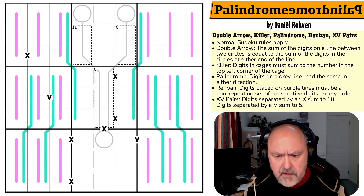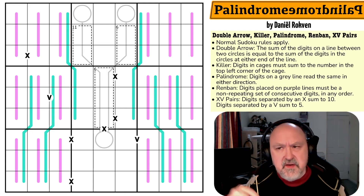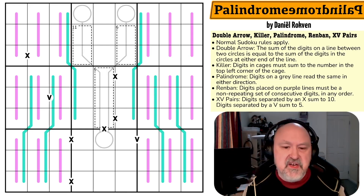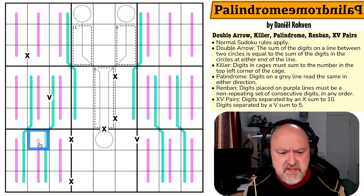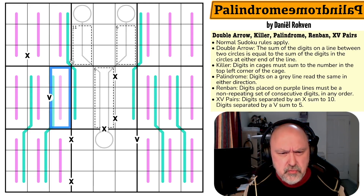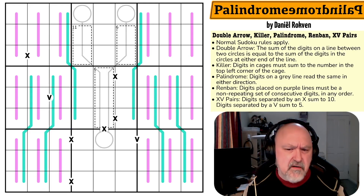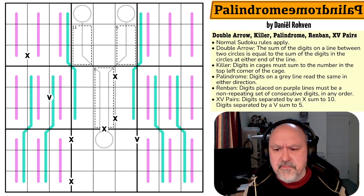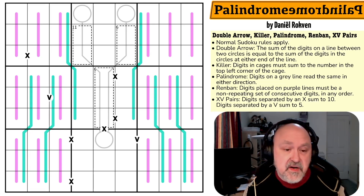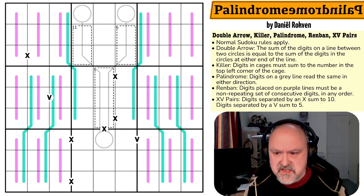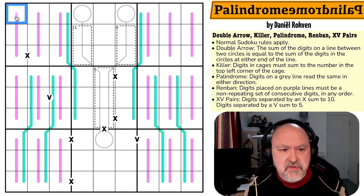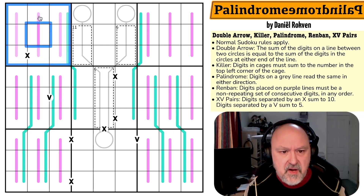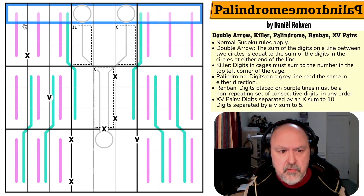There is a link below to the Logic Masters Germany page where the original grid can be found. A lot of these lines were the same, but there were extra rules added to clarify what was going on. This revised version is what the testers recommended, so I'm going with that. Normal Sudoku rules apply: in every box, every row, and every column, the digits one to nine must be placed without repetition.